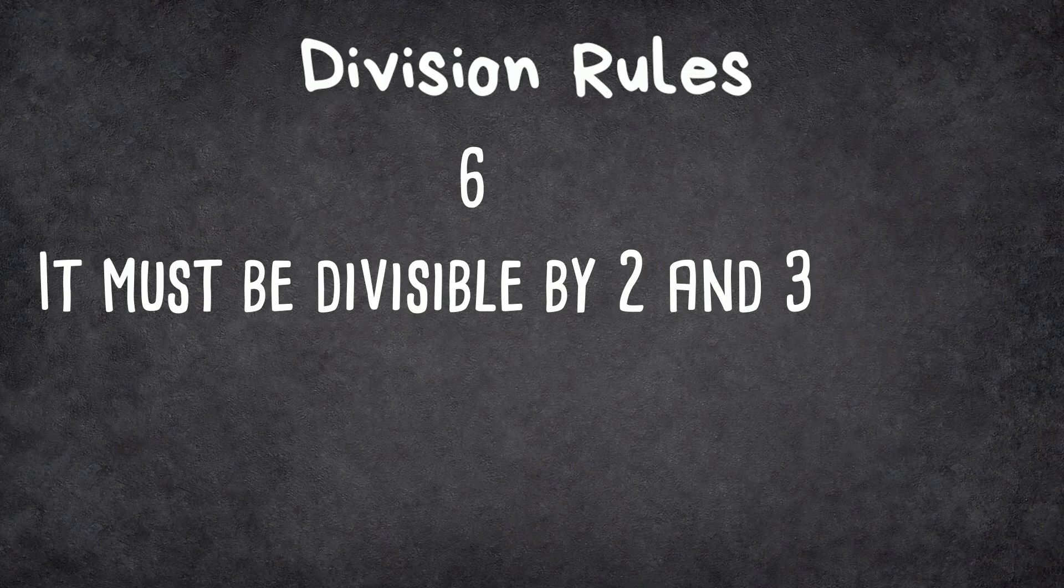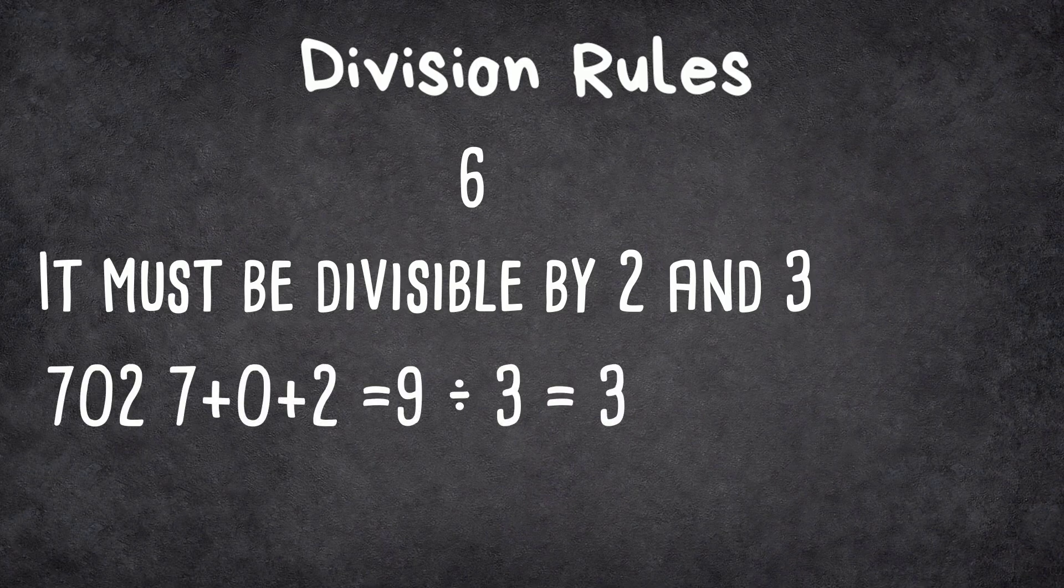For 6, it must be divisible by both 2 and 3. So look at 702: we know it's divisible by 2 because of the 2, and then 7 plus 0 plus 2 is 9, which is divisible by 3.